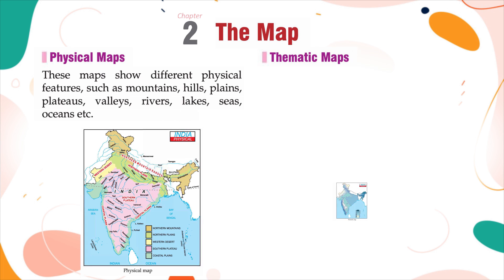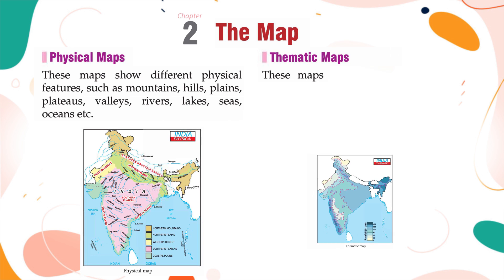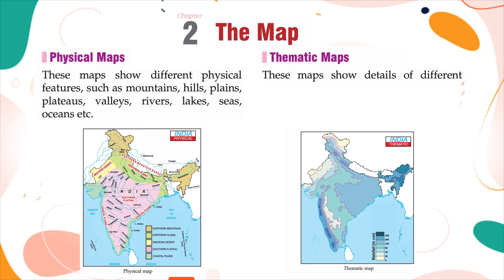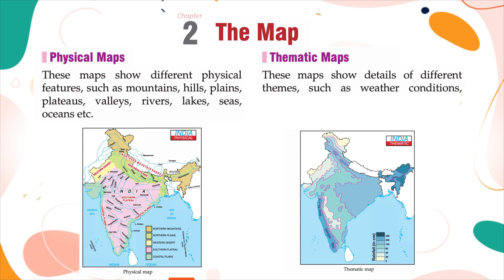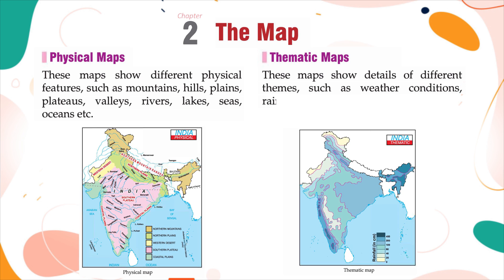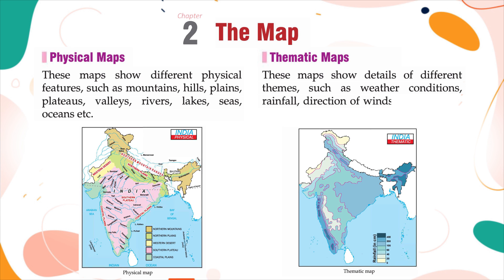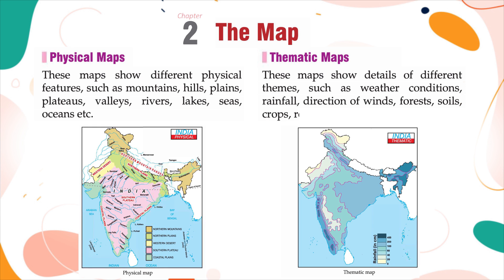Thematic Maps — these maps show details of different themes such as weather conditions, rainfall, direction of winds, forests, soils, crops, roads, etc.